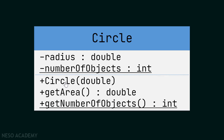If a constructor takes two parameters, for example a double and an integer, we put double comma integer. Now the next method is also public — it is called getArea, takes no parameters, and its return type is double. The third method is also public, called getNumberOfObjects, takes no parameters, and returns an integer. It is underlined, so this is a static method.